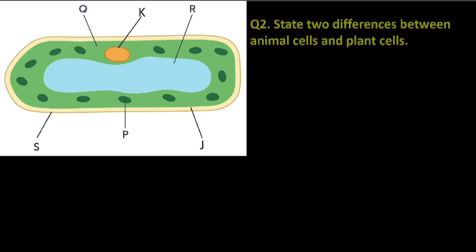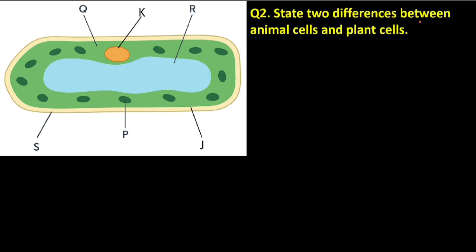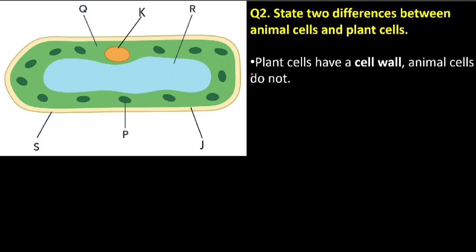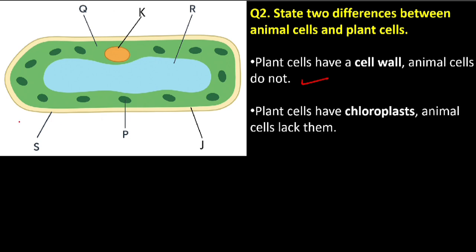Question number two: state two differences between animal cells and plant cells. The first difference is that plant cells have a cell wall while animal cells do not have a cell wall. Number two: plant cells have chloroplast — you can see the part labeled P, these are the chloroplasts — while animal cells do not have chloroplast. The reason is that plants make their own food through photosynthesis, and chloroplast contains chlorophyll, which is essential in photosynthesis.